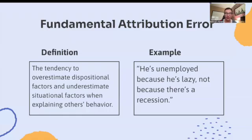Fundamental attribution error is the tendency to overestimate dispositional factors and underestimate situational factors when explaining others' behavior. For example: he's unemployed because he's lazy, not because there's a recession.